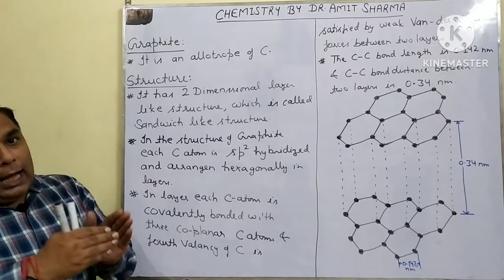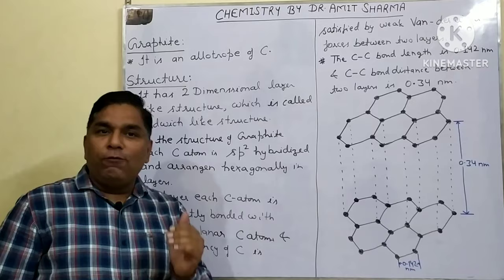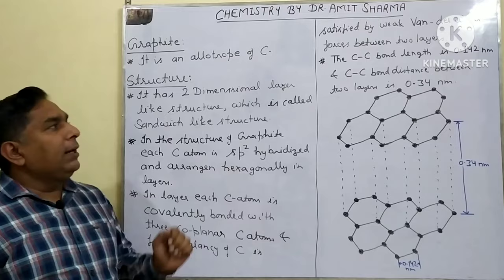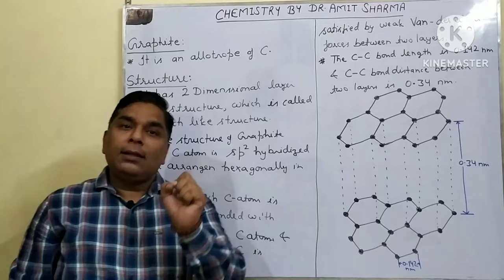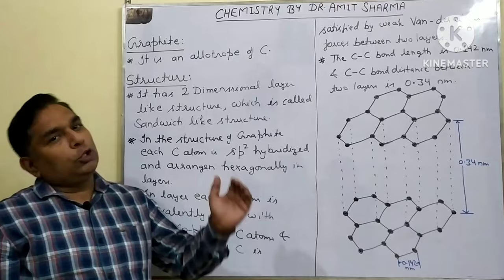The carbon-carbon bond length within a layer is 0.142 nanometers (1.42 Å or 142 pm). The carbon-carbon distance between two layers is 0.34 nanometers (3.4 Å or 340 pm).